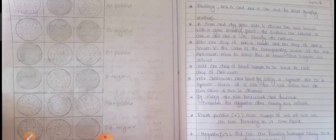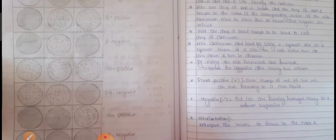The reagents are anti-A, anti-B, anti-D. The blood groups are A positive, A negative, B positive, B negative, AB positive, AB negative, O positive, O negative. Then comes the method.